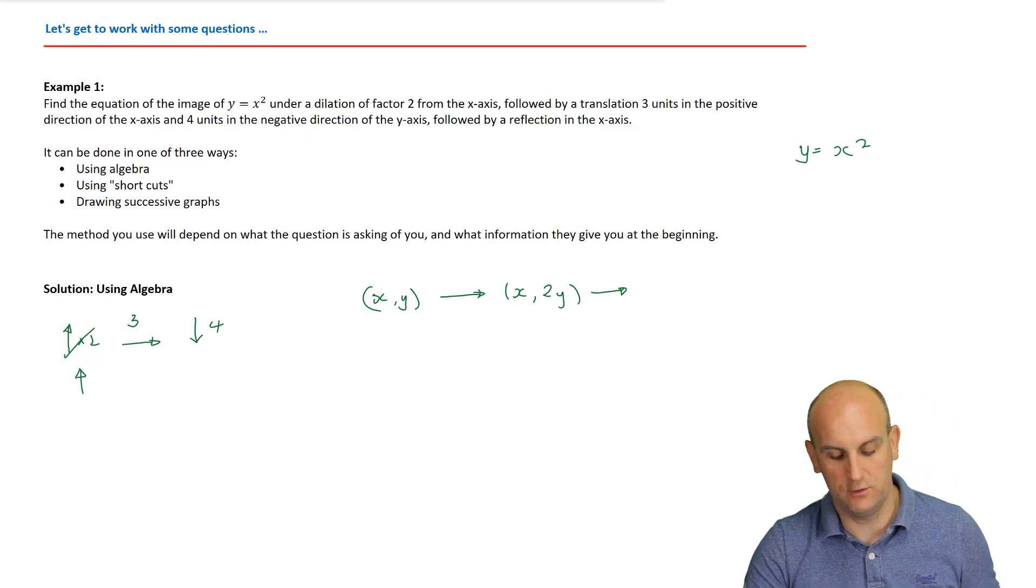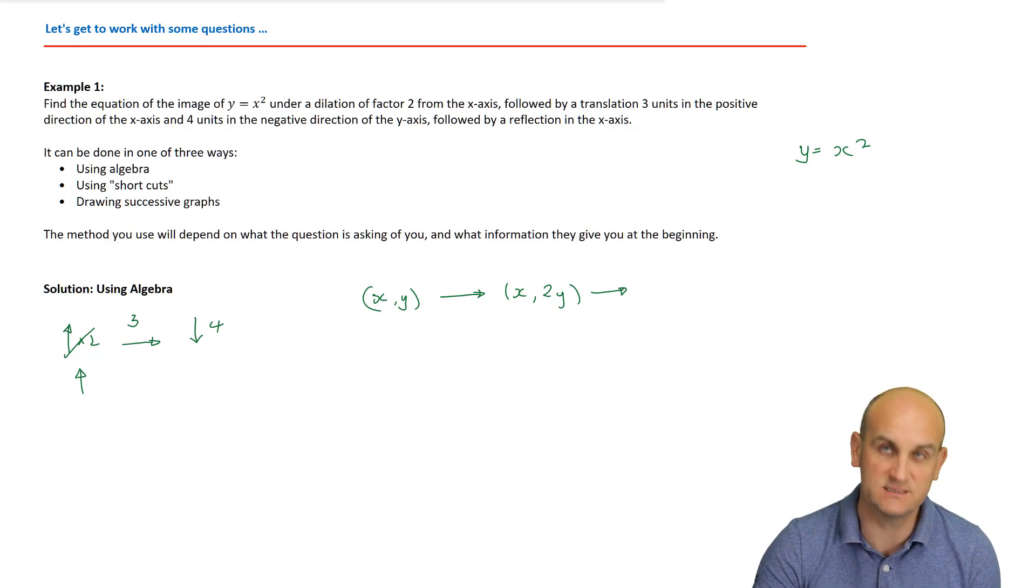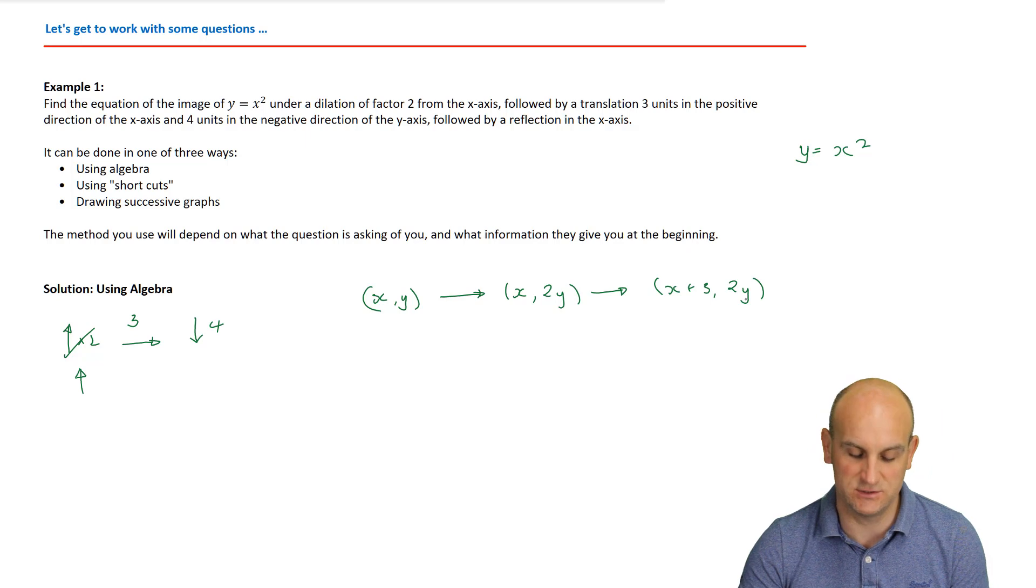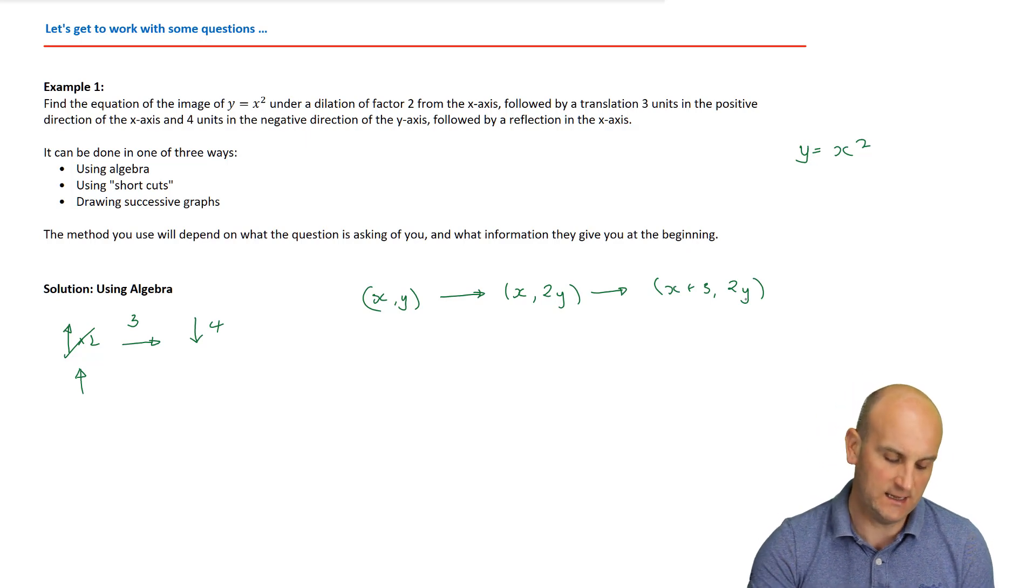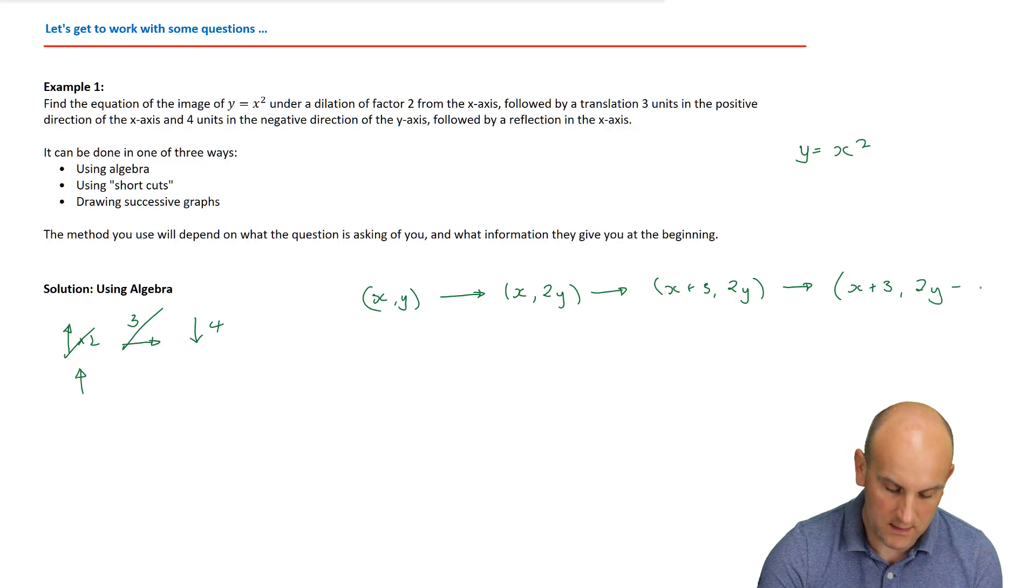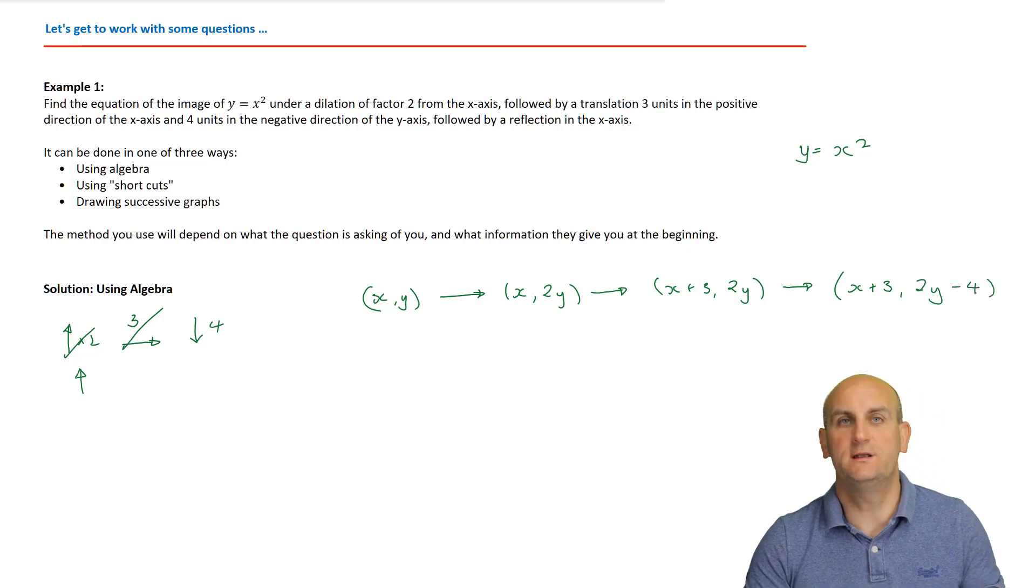So that's that one done. Then I'm going to move my whole graph three units to the right. So in the positive direction. So that's going to change my x values. So that's going to become x plus three. And that stays as 2y because it doesn't change the 2y. And then finally, I'm going to do my four units down. Well, that is going to change my y value. And so I'm going to end up with x plus three comma 2y minus four.